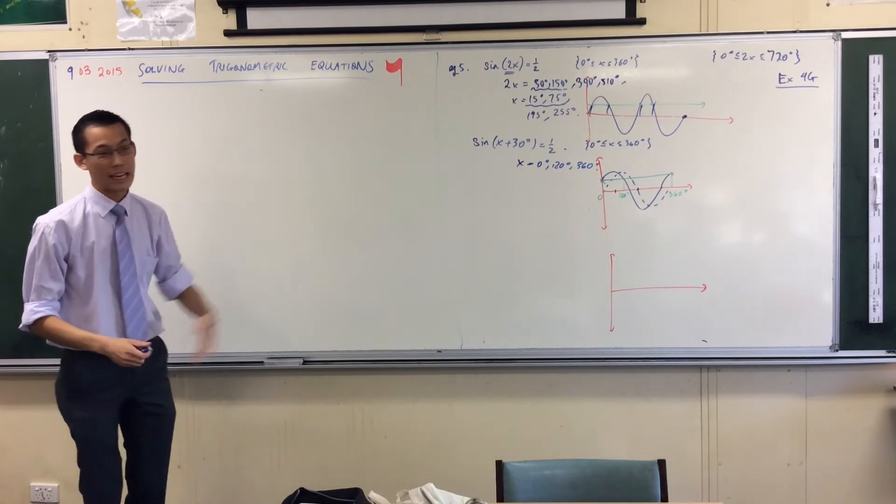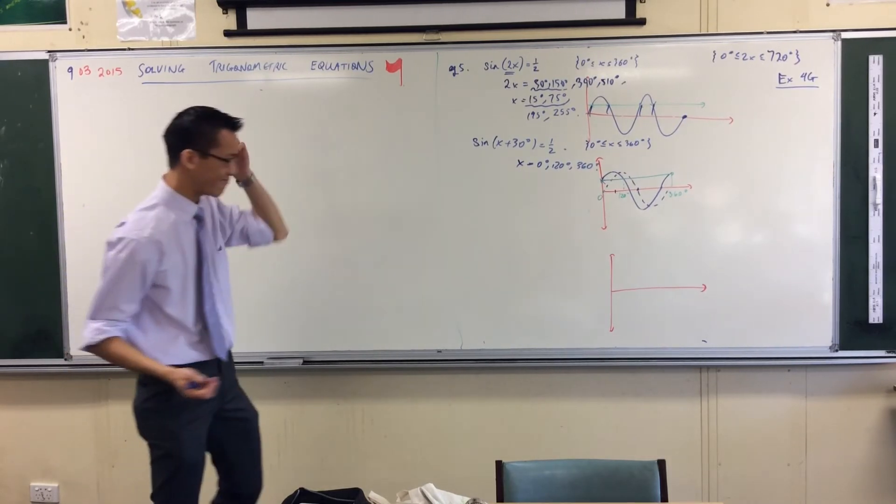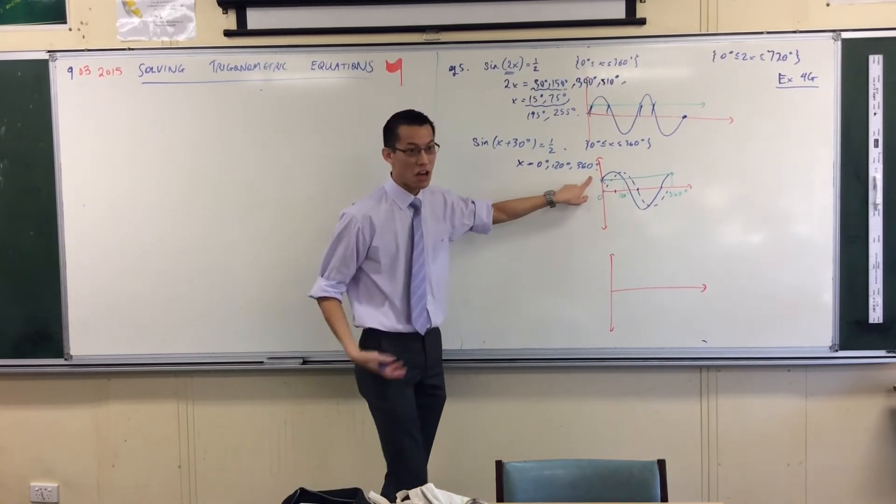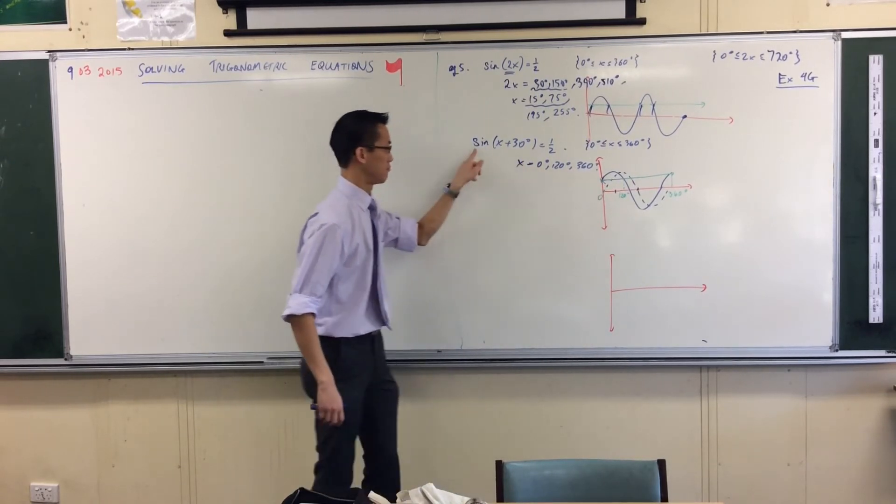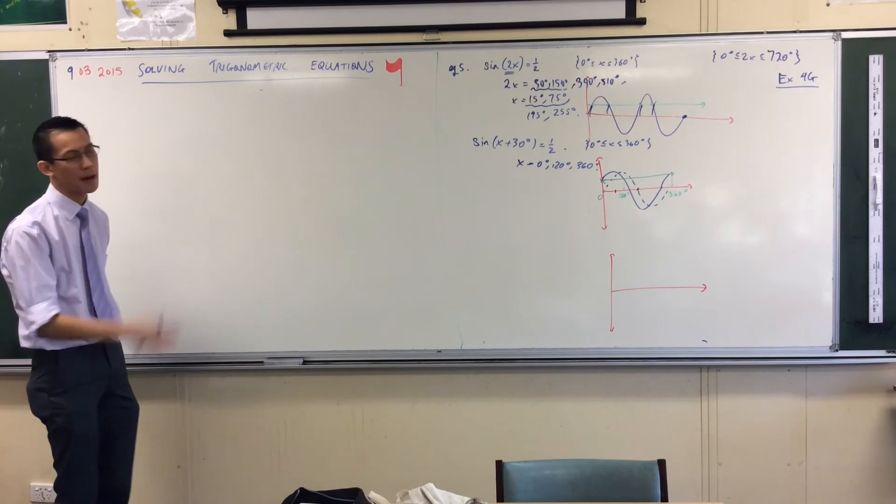And the great thing about trig, at least with trig equations, is just like regular equations you can just try it out. You're like, it's a bit weird right? Just chuck it in your calculator. Sine 390, sure enough it'll give you a half. In case you're not convinced by the graph.